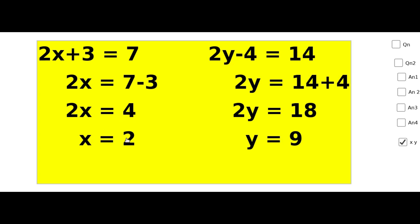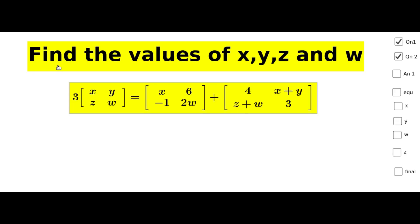From 2y-4 = 14: 2y = 14+4 = 18, therefore y = 9. Therefore the values are x = 2 and y = 9.